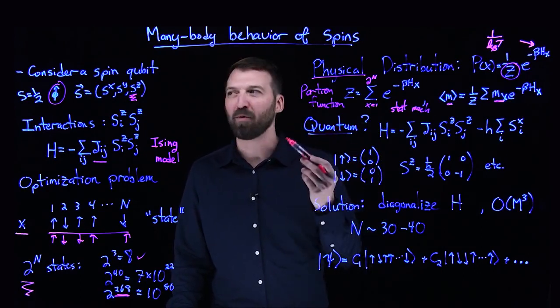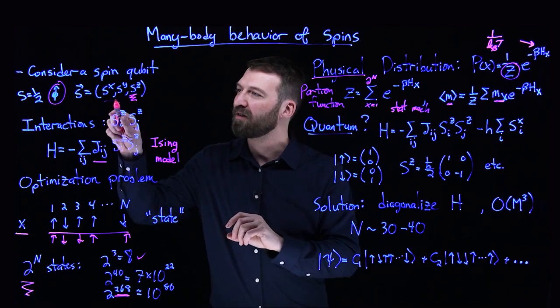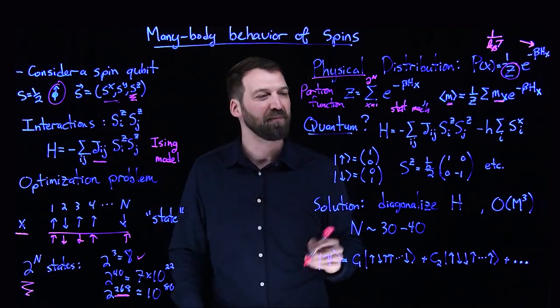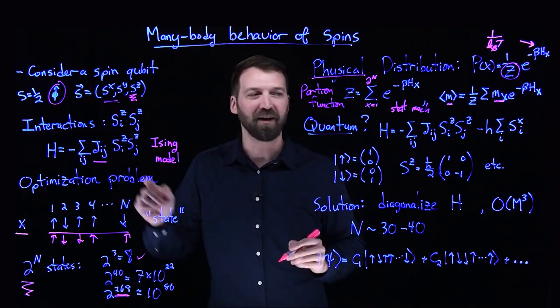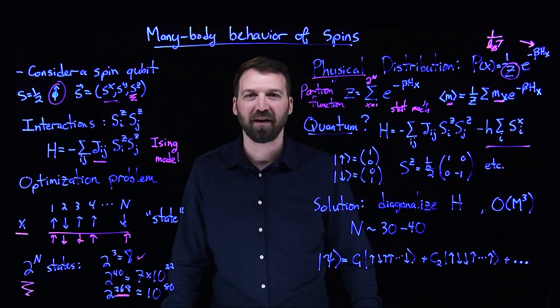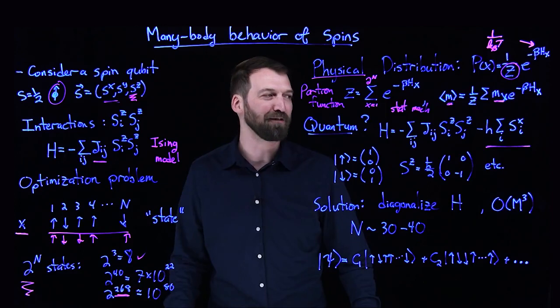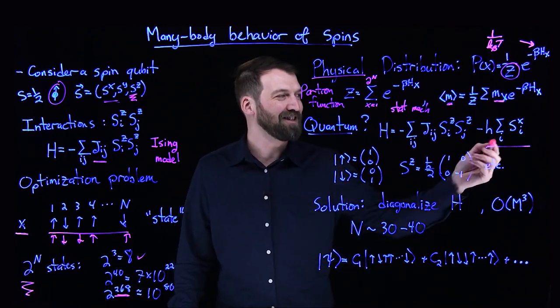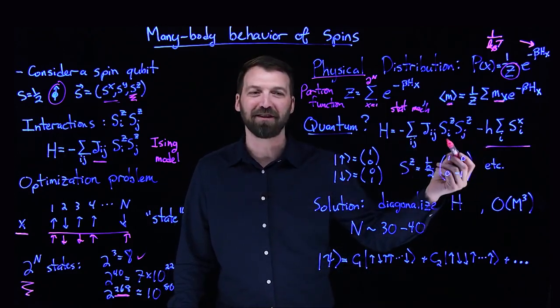That was all classical. What I've done is ignored those two components of spin. But imagine my Hamiltonian for my Ising model also had a quantum piece—an off-diagonal matrix element, if you will.